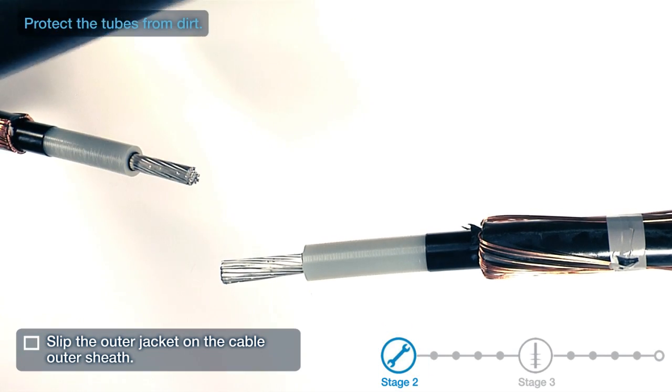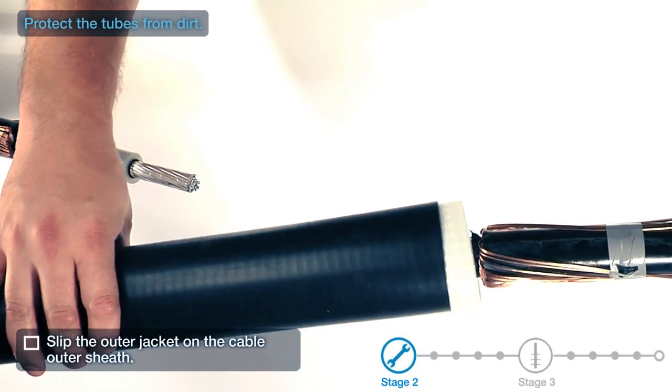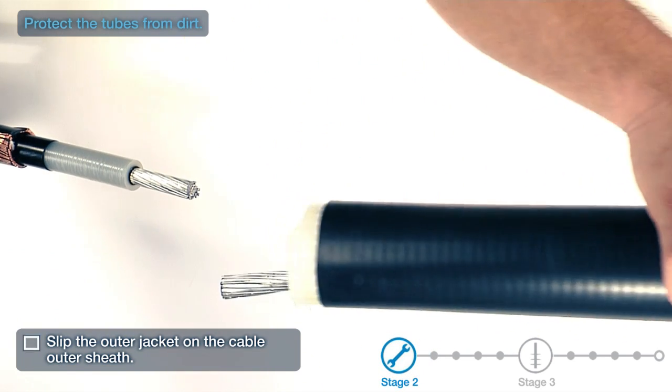Slip the outer jacket on the cable outer sheath. Protect the tubes from dirt.